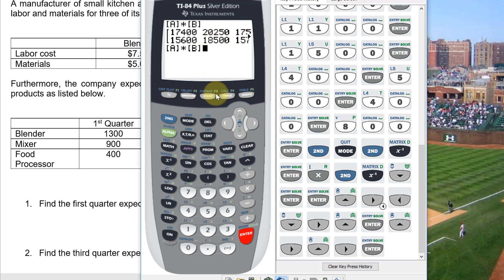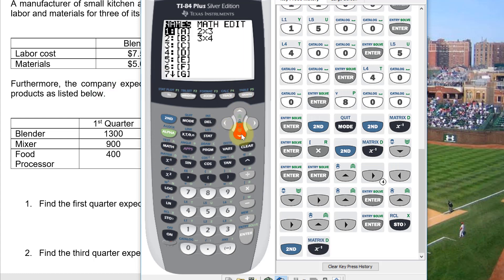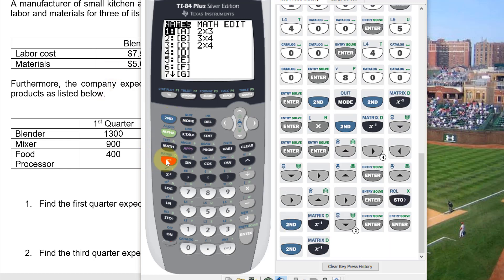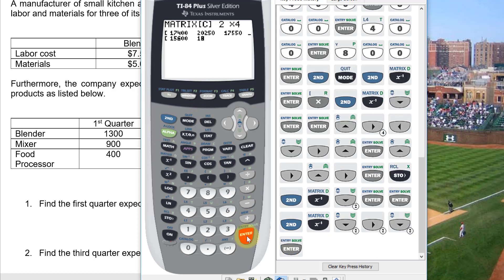So one solution I think I'm going to try here is to do this store, store it in matrix C. So if I store it in matrix C, then I can go back and edit matrix C and actually view it. So I can view it in the edit menu.